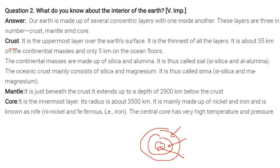So crust, it is the uppermost over the earth's surface. It is the thinnest of all layers. It is about 35 kilometers on the continental masses or land and only 5 kilometers on the ocean floor, that is sea.